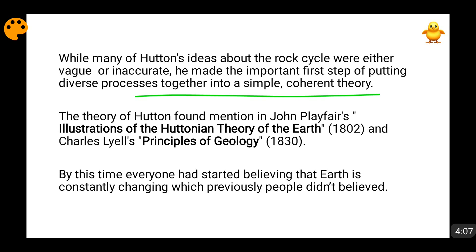Hutton was not very good at writing — he was good at logical thinking and implementing things, but not at writing. Whatever he wrote was very technical and highly scientific, and very few people were able to understand it. But his theories and thought processes were published in John Playfair's 'Illustration of the Huttonian Theory of the Earth', published in 1802, and the next was 'Principles of Geology' in 1830. At this point, when the 19th century started, the debate of catastrophism versus uniformitarianism was ended, because people started to believe that yes, the earth is changing continuously, and what was happening years back is happening today also. Previously this was not accepted; now it became an accepted fact.